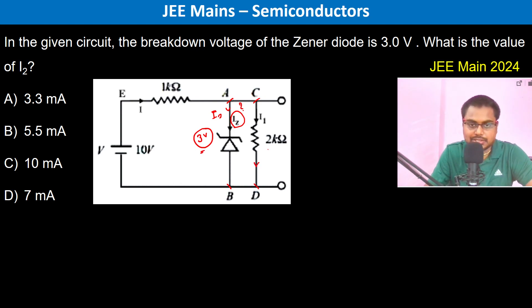Therefore, the current I1 is equal to 3 volts divided by 2 kilo ohm, which is 1.5 milliampere.